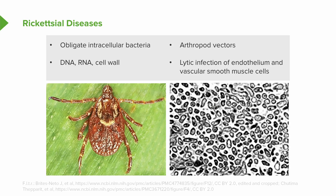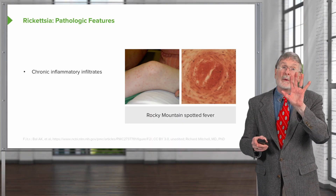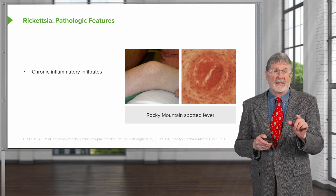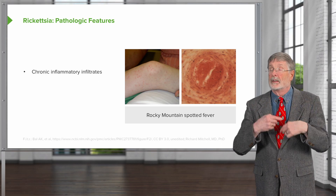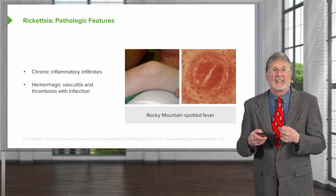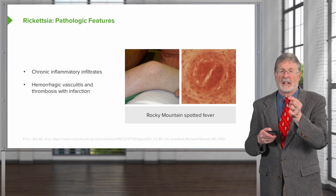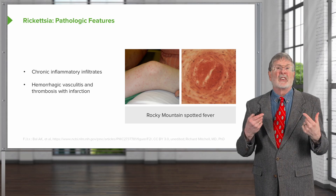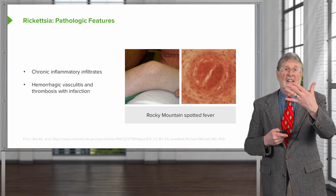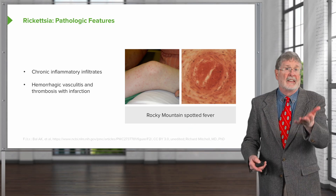If you lyse endothelial cells, you should get thrombosis — and that's exactly what happens with rickettsia. Being an obligate intracellular pathogen, we typically see a chronic inflammatory infiltrate, since we can't really deal with it using neutrophils and antibodies. It will tend to cause a hemorrhagic vasculitis. The tropism of this bug — going to endothelial cells and smooth muscle cells — leads to lytic infection, then thrombosis, and if you have thrombosis of a vessel, the tissue downstream is going to die, so you'll have infarction.